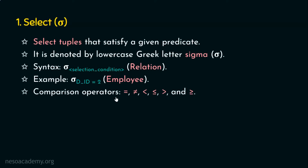The comparison operators we can use in the predicate of a relational algebra expression are: equal to, not equal to, less than, less than or equal to, greater than, and greater than or equal to. All these operators compare the left-hand side and the right-hand side. In the previous example, we have seen only one condition — department ID equal to 2.